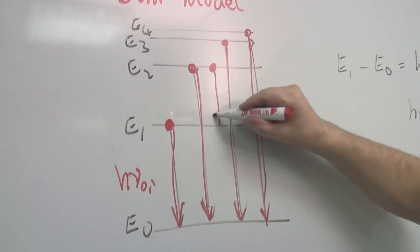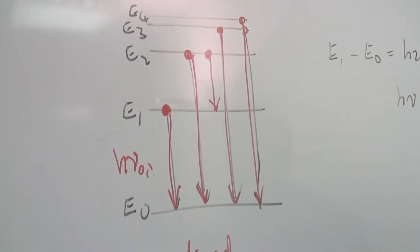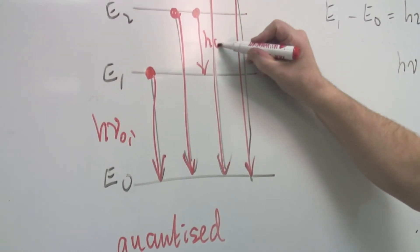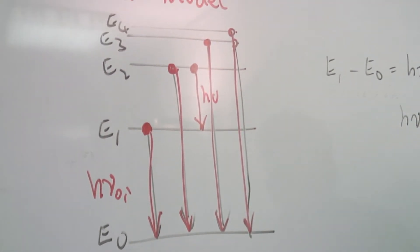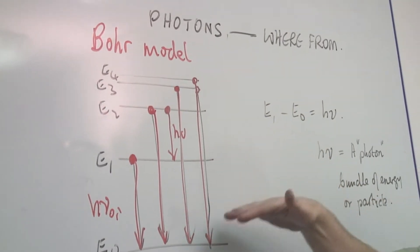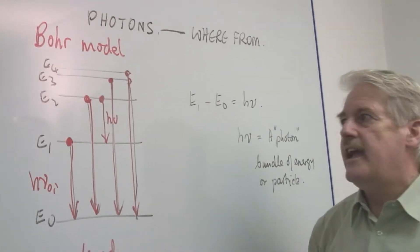I mean, it could fall from there to there. That is also producing a different photon of energy. And all these different energy levels give us lots of different energies.